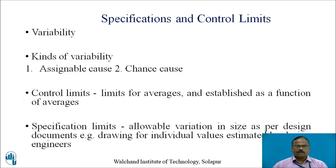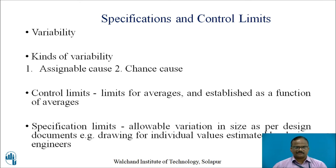Under quality engineering, the first important thing is process capability. To understand process capability and how to make a process capable, we must first understand what is variability. Variability is a natural thing — it is said that even twins are not alike. So it is impossible to get the exact dimension; if we do get it, that dimension will be by chance. There are different kinds of variability.